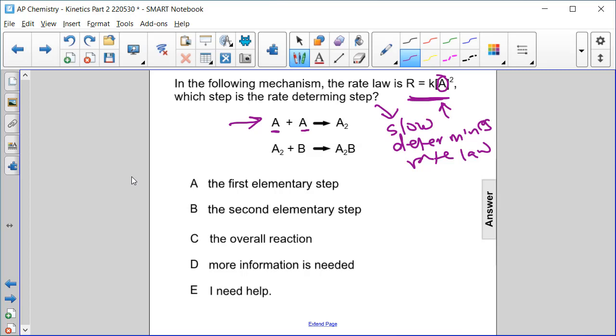Okay, and how many of them are there? There are two, which is why we get this square. Okay, so the rate determining step, the slow step, would be the first elementary step or answer choice A.